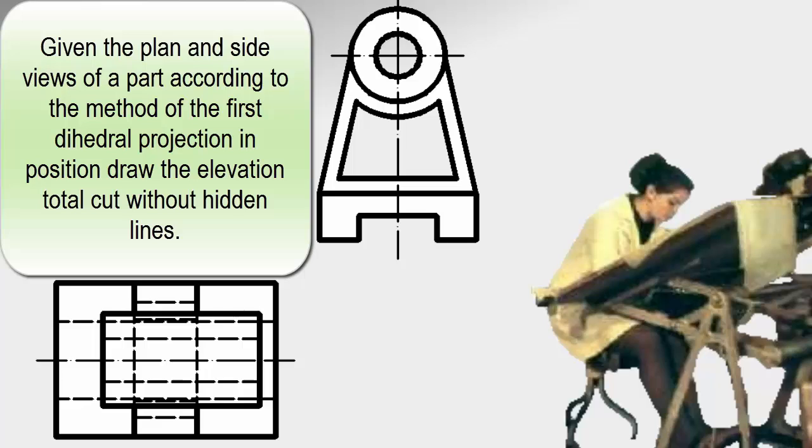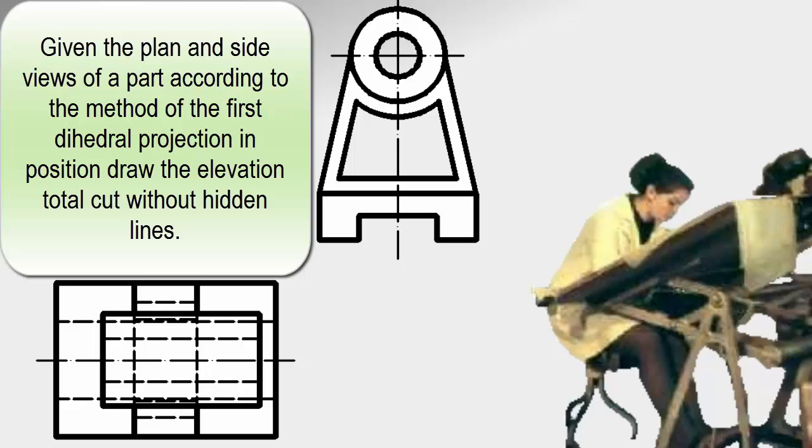The statement says that, given the plan and side views of a part according to the method of the first dihedral projection in position, draw the elevation total cut without hidden lines.